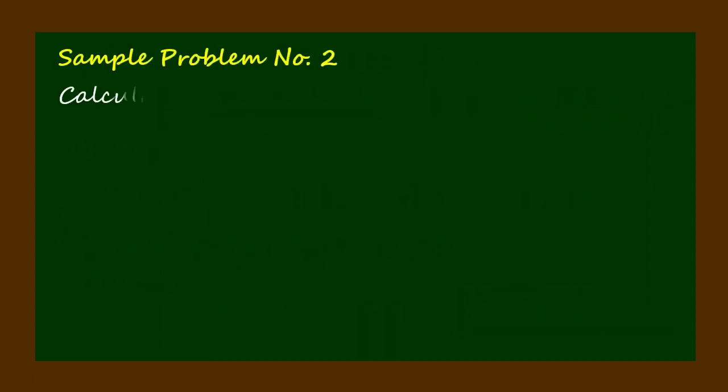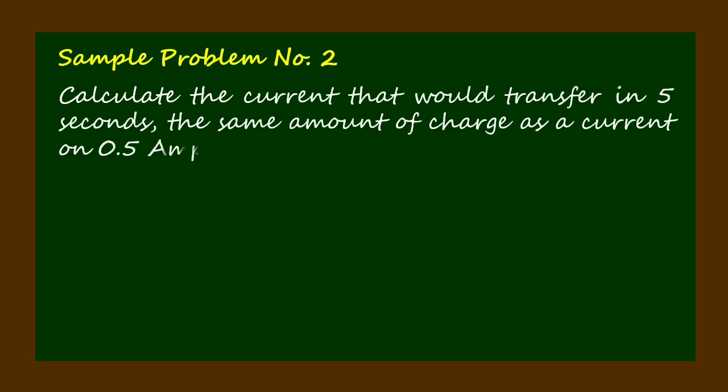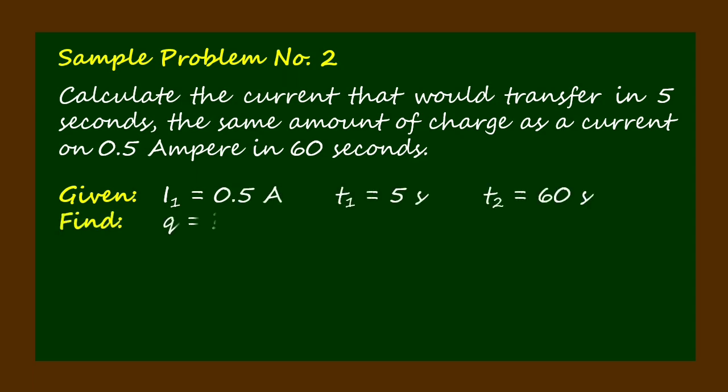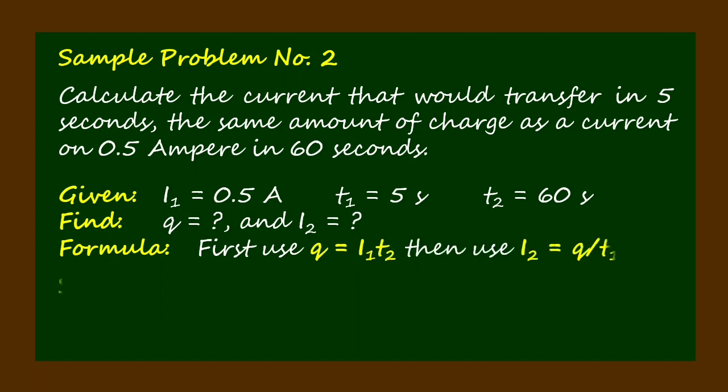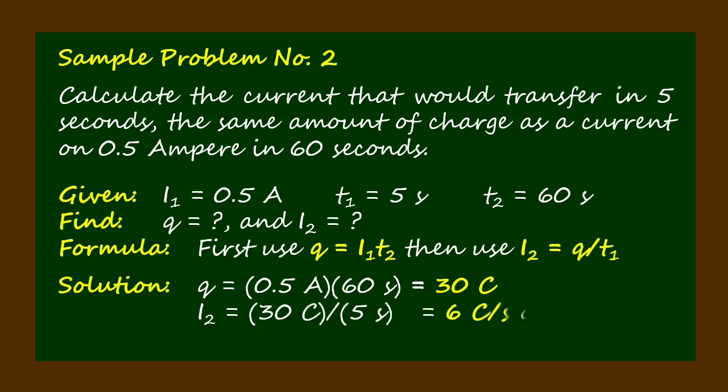Sample problem number two: Calculate the current that would transfer in five seconds the same amount of charge as a current of 0.5 ampere in 60 seconds. Given: I₁ = 0.5 ampere, t₁ = 5 seconds, and t₂ = 60 seconds. Find: q and I₂. Formula: First use q = I₁t₂, then use I₂ = q/t₁. Solution: q = 0.5 ampere × 60 seconds, thus q = 30 coulomb. To solve for I₂: I₂ = 30 coulomb ÷ 5 seconds = 6 coulomb per second or 6 amperes.